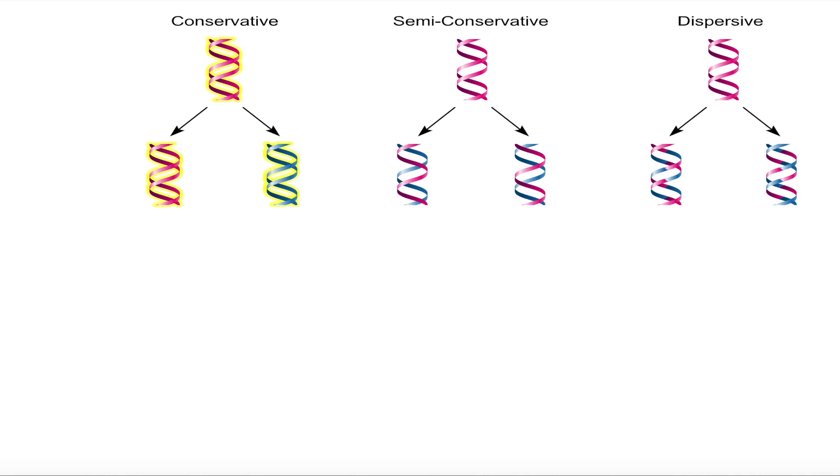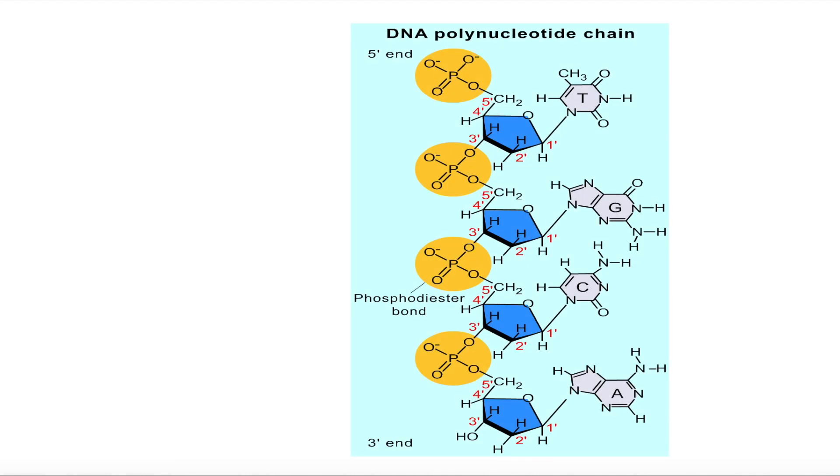The three models predicted different distributions of parent and new DNA after replication, so if you could distinguish between the two in the progeny DNA, only one model would be consistent with the results. Matthew Meselson and Frank Stahl developed a way to distinguish these molecules by using a heavy isotope of nitrogen known as 15N.